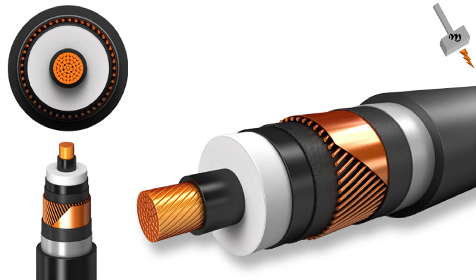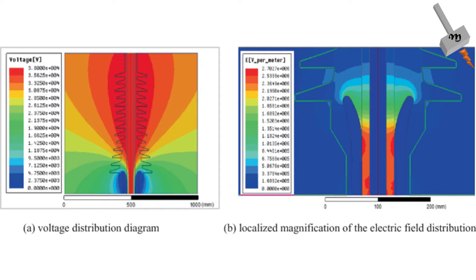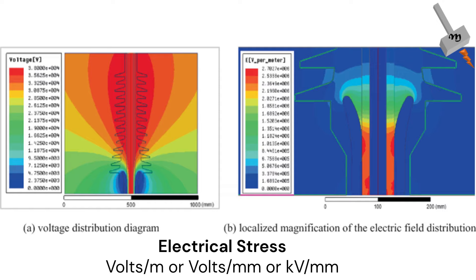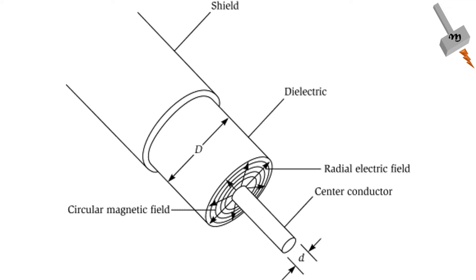High-voltage cables are engineered to minimize electrical stress on insulation. Electrical stress is measured in volts per meter. Cable shields are provided to achieve symmetrical and uniform electrical field distribution around the center conductor, thereby minimizing electrical field stress.